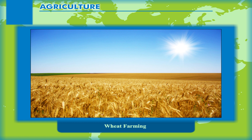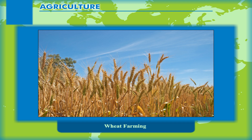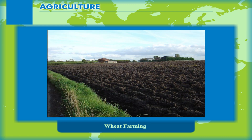Wheat Farming: Wheat is grown under a wide range of climatic conditions, from Siberia to the tropical regions. However, it is the main crop of the temperate region. It requires cool weather and a rainfall between 40 cm to 75 cm. At the time of ripening, there should be clear sky, otherwise the ripened crop is damaged. The rainfall between 30 cm to 80 cm is ideal for its cultivation. Loam is the most suitable soil.